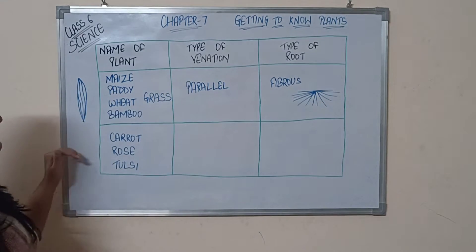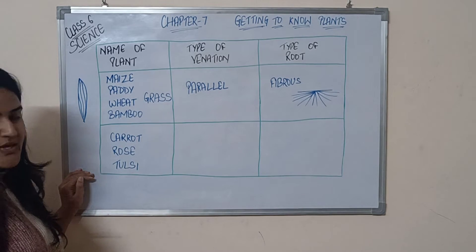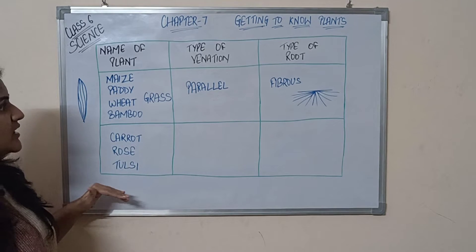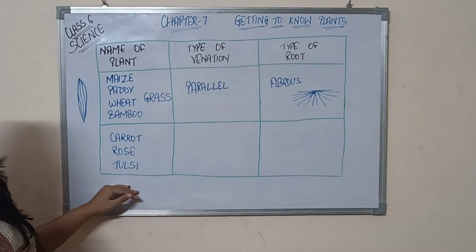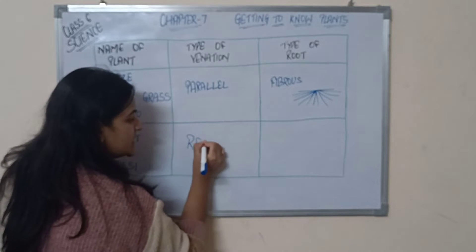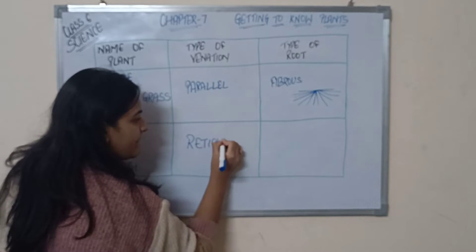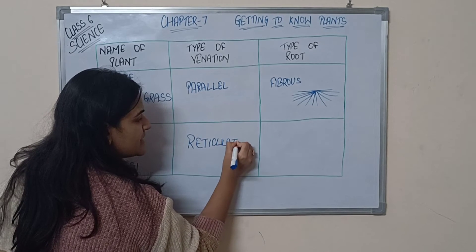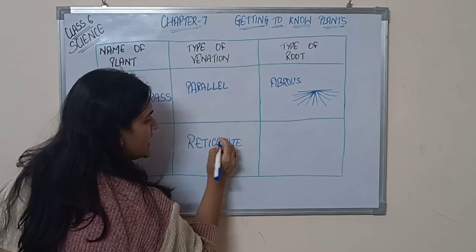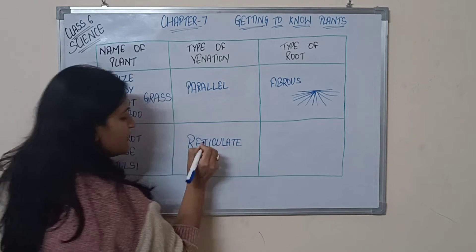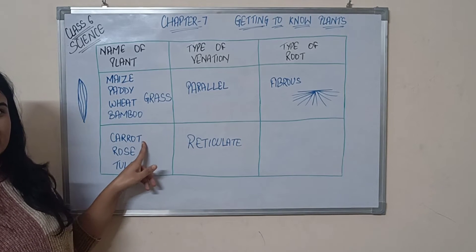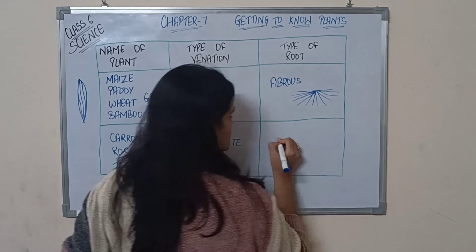On the other hand, we have carrot, rose, and tulsi — these are very different categories of plants. What kind of venation do these plants have? Reticulate venation. And what kind of root system do they have? Carrot has a taproot system.